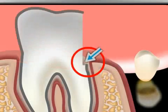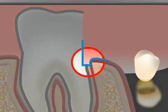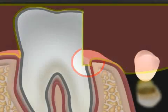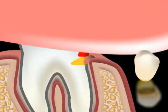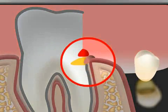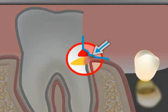Otherwise, the dental technician does not know up to what point he should prepare the crown margins. In many cases, blood, saliva, or the gums themselves obscure the preparation margins. Thus, if the impression is taken without the appropriate preliminary work, the impression material is not able to surround the preparation margins.